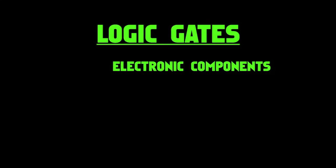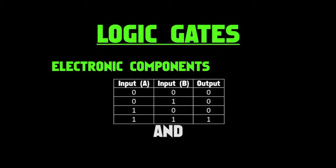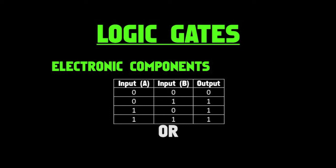Next, you need to understand what basic logic gates are. Logic gates are electronic components used as a basis for all computing. There are three main types: the AND gate, the OR gate, and the NOT gate. The names are fairly self-explanatory. With the AND gate, both inputs need to be on for the output to be on. With the OR gate, either one or both inputs must be on for the output to be on. The NOT gate has only one input, and it simply inverts the signal.